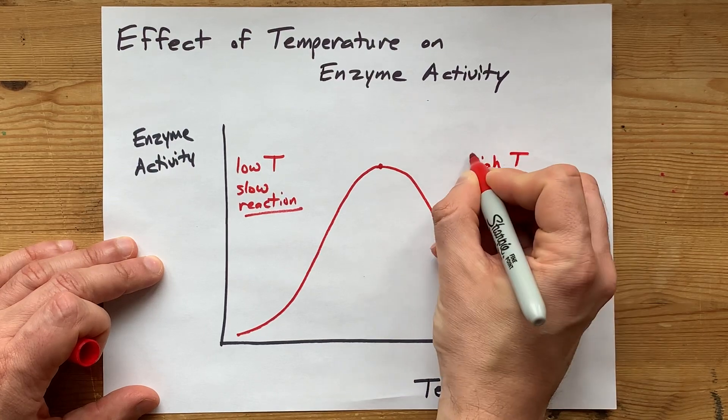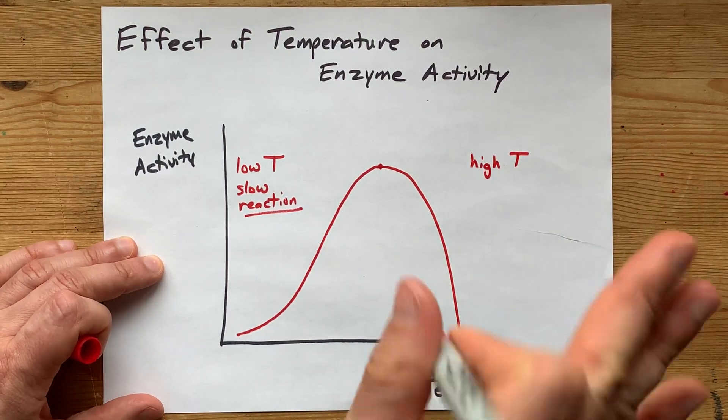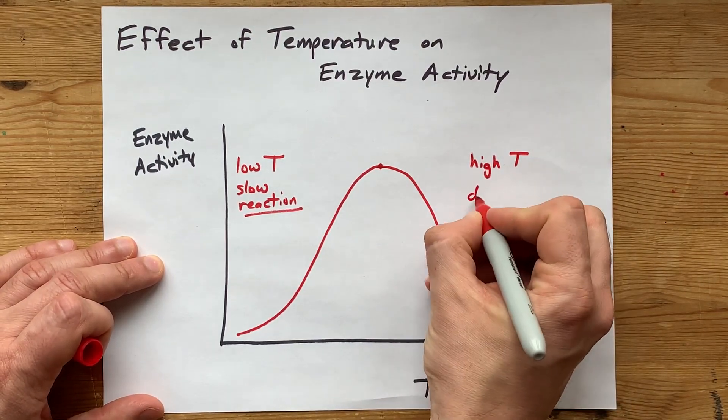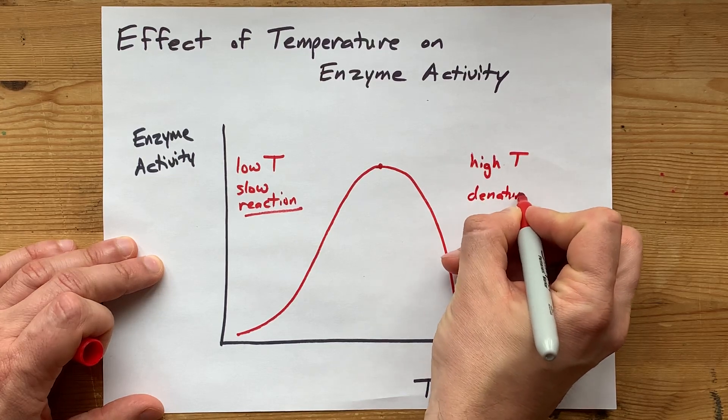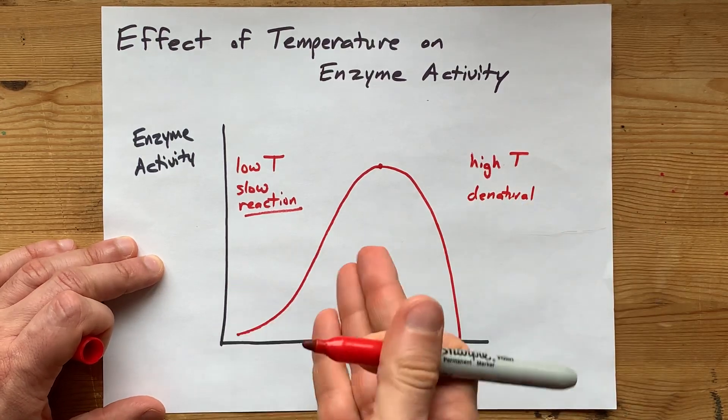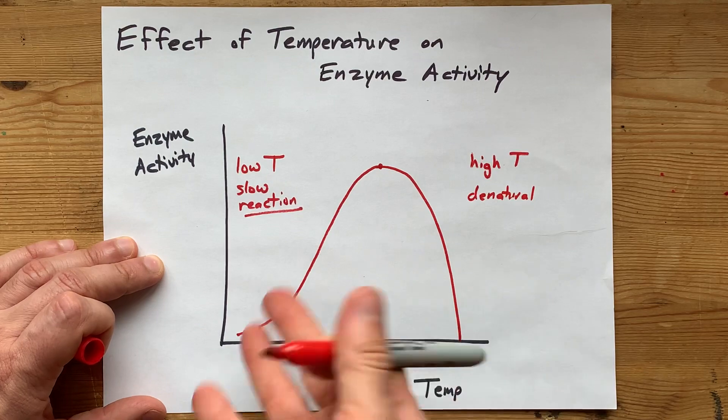which is another way to say that they just simply break down chemically. High temperature, the enzyme itself breaks apart. So how can the enzyme be active if it's been broken apart? It can't.